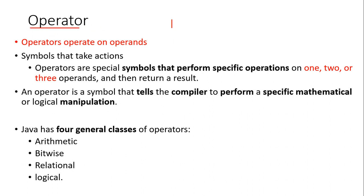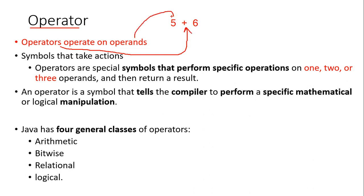Let's go to the real topic of today, and that is operators. What is an operator? To understand this, you have to understand some basic mathematics. Whenever you write '5 + 6', the plus symbol is an operator. The numbers 5 and 6 are operands. So the operator acts on the operands — operators are symbols used to perform some specific operation, in this case adding two numbers.